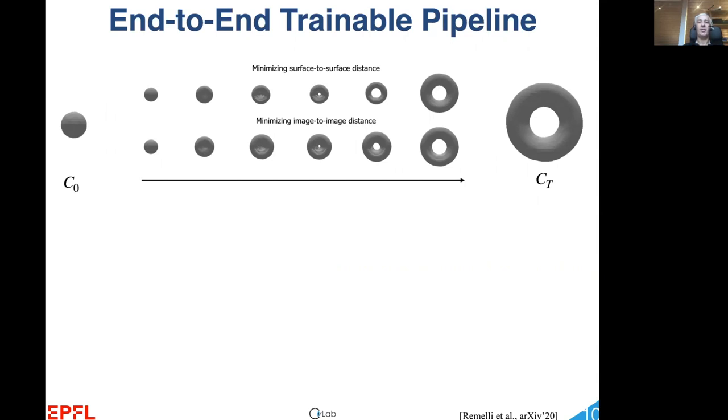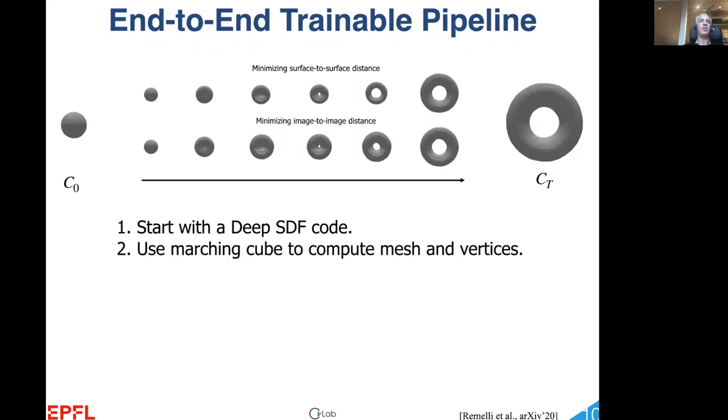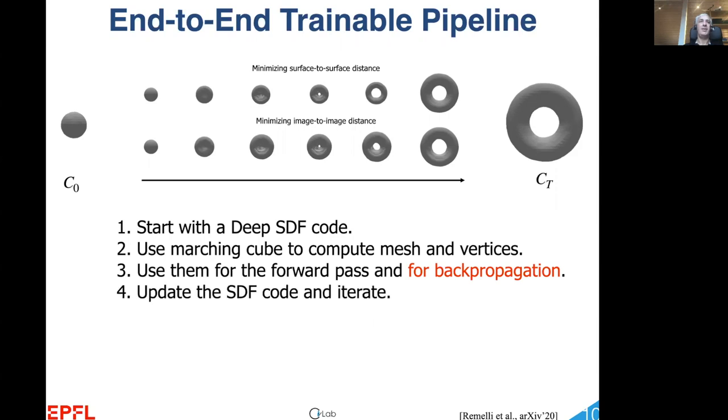At each iteration, we start with a code C, use the Marching Cubes algorithm to compute the vertices, use them to perform the forward and backward passes as discussed, and then we finally take a gradient step and iterate.